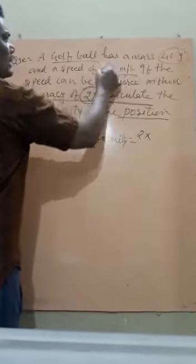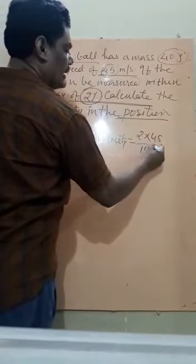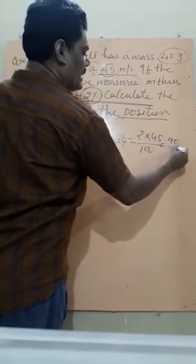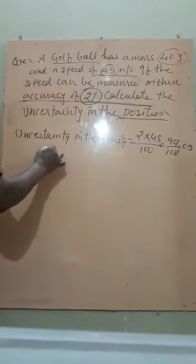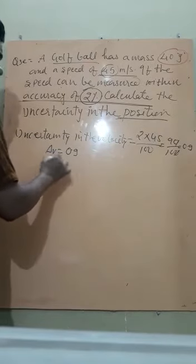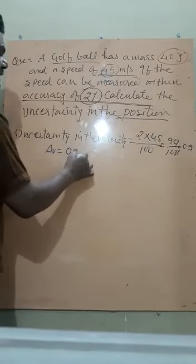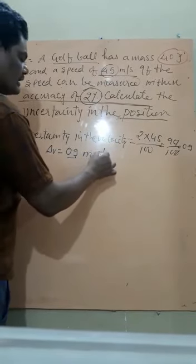45 divided by 100 is equal to 90 upon 100, is equal to 0.9. So the value of del V is equal to 0.9 meters per second.